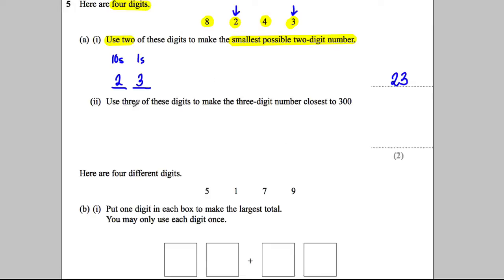Next, use three of the digits. So let's get our highlighter out. Use three of these digits to make the three-digit number closest to 300.